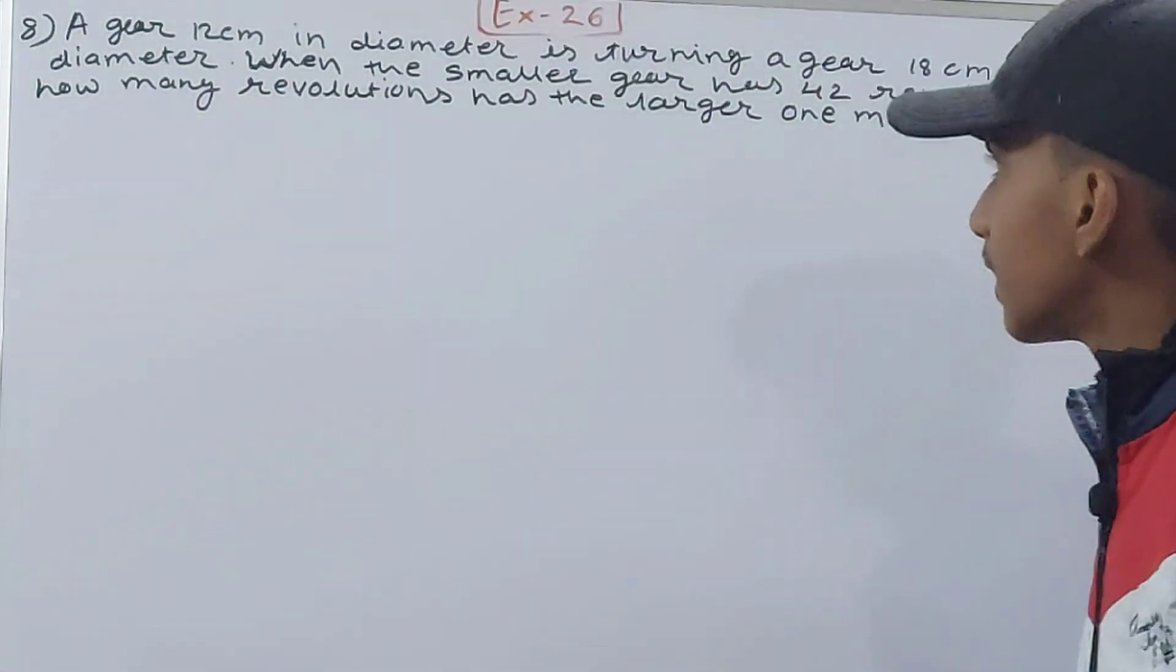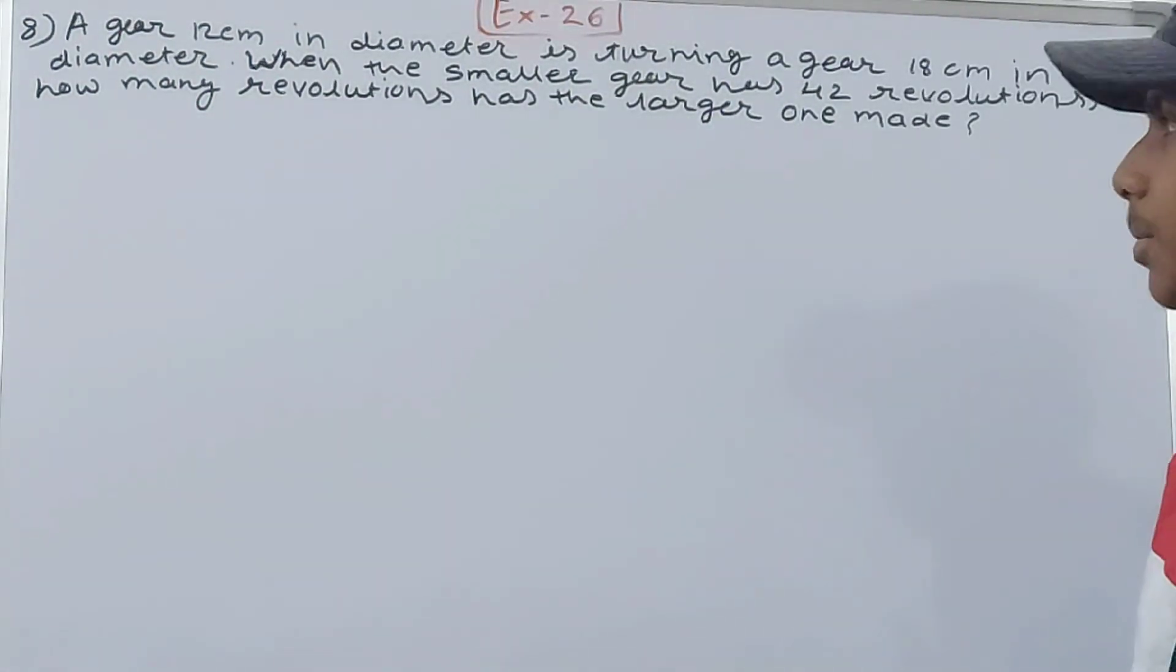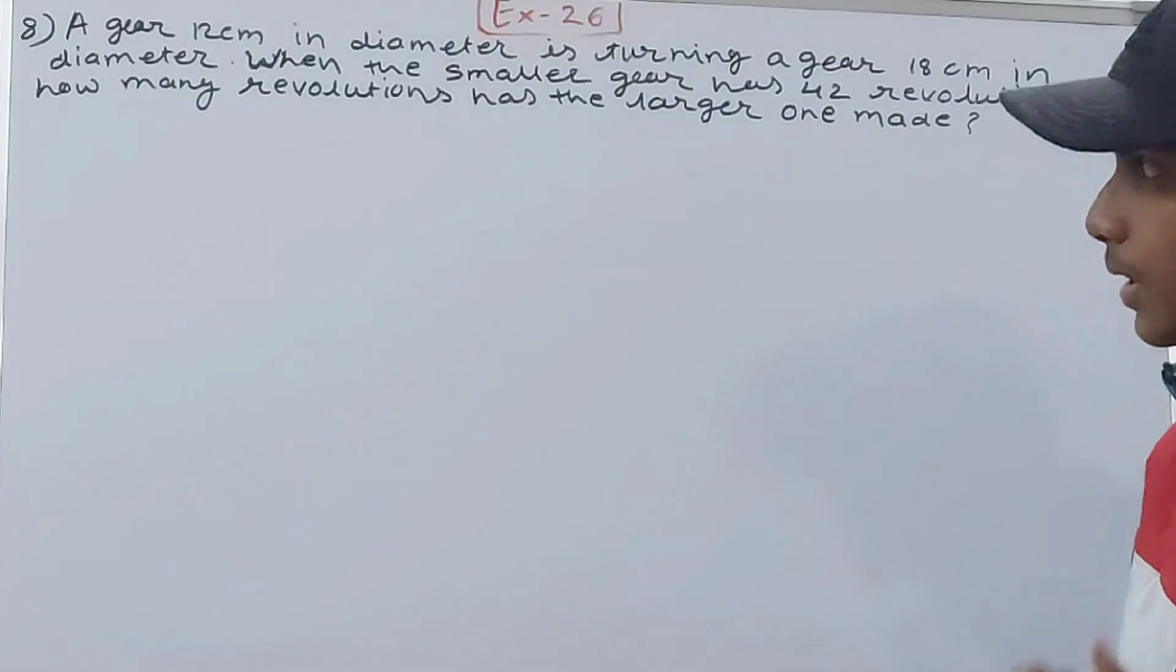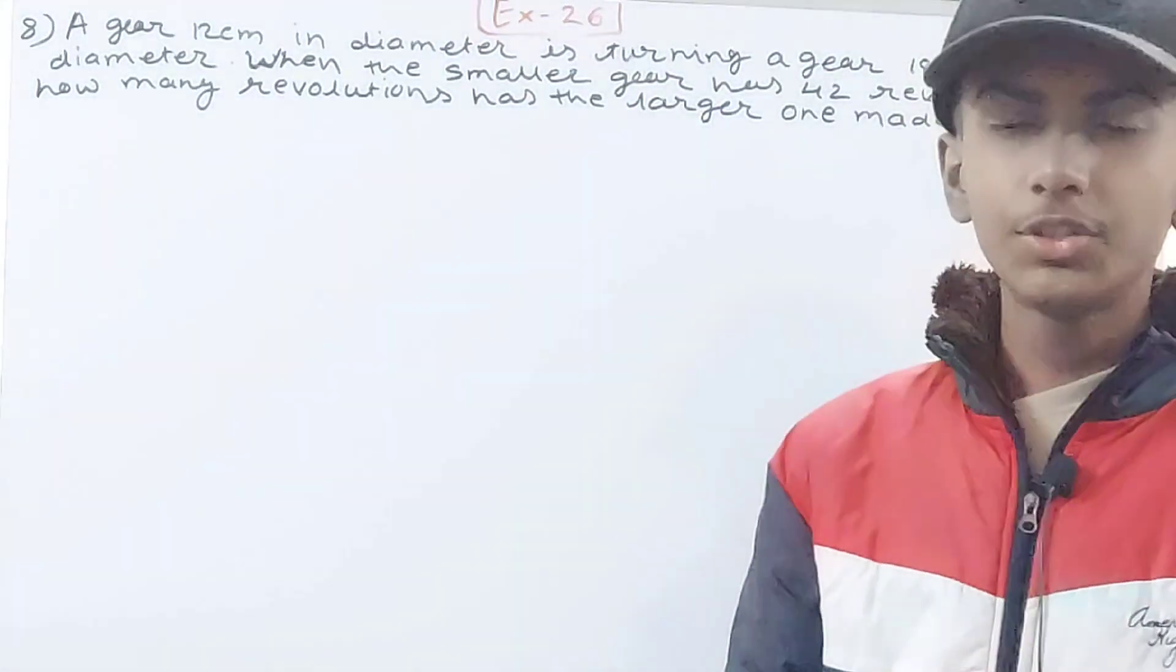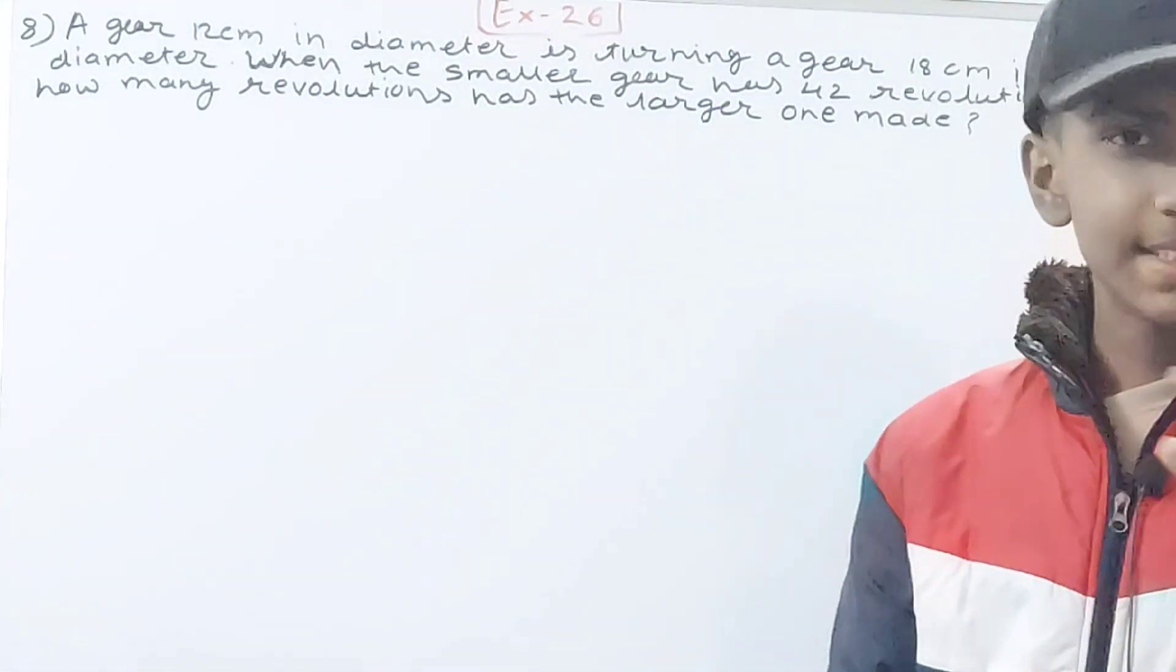A gear 12 centimeter in diameter is turning a gear 18 centimeter in diameter. When the smaller gear has 42 revolutions, how many revolutions has the larger one made? So a gear is there, 12 centimeters in diameter, and it is turning another gear that's 18 centimeters in diameter.